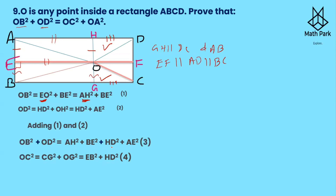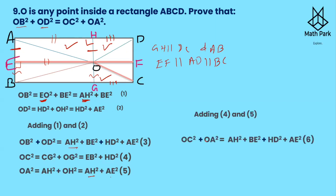For OA², we take triangle OAH. OA is the hypotenuse, so OA² = AH² + OH². AH² is already known. OH = AE because EOHA is a rectangle, so OH² = AE². Thus OA² = AH² + AE². This is equation five.